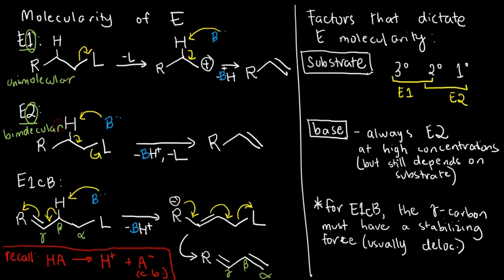Now, that means that in E1, there is only one molecule involved in the rate determining step, and that is our substituted alkane, which is this one. But for E2, not only is the substituted alkane involved, but also our base.